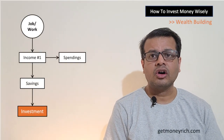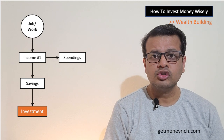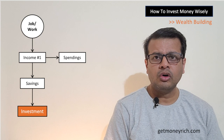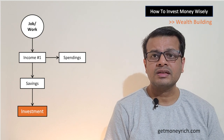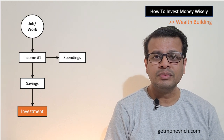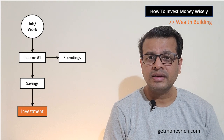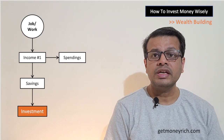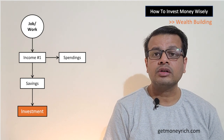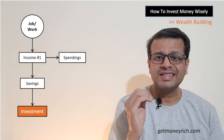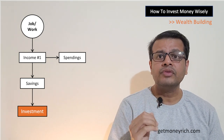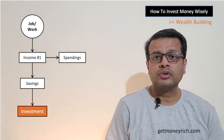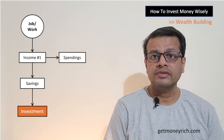Most of us do a job; some of us also do business to earn money. Our job or business gives us the potential to earn money, and from that earned money we manage our spendings and save a part of our income. From the savings we have made, we invest it. Generally our thought process stops at this stage — job makes income, from income we do savings, and from savings we invest the money.